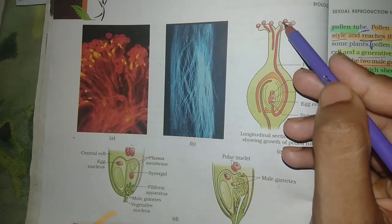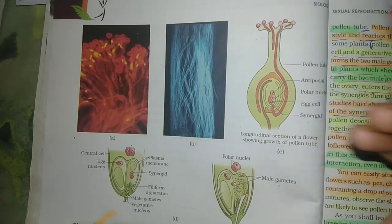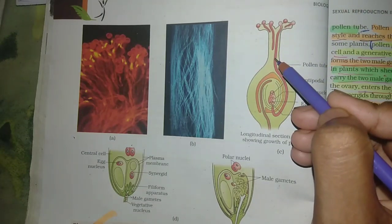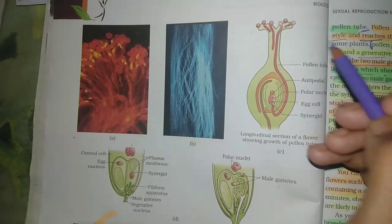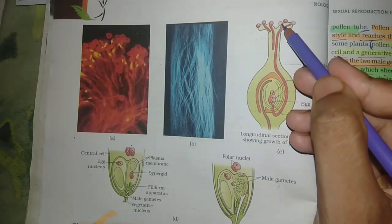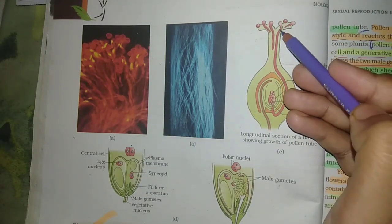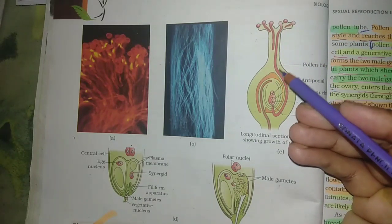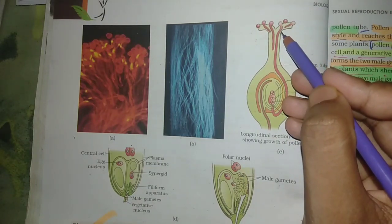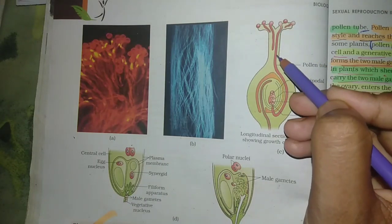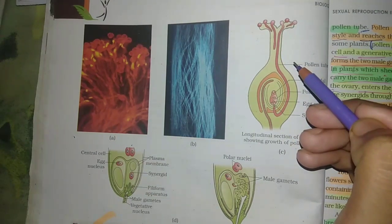The generative cells divide and form two male gametes. When the pollen material comes through the pollen tube, the generative cells divide and form two male gametes.